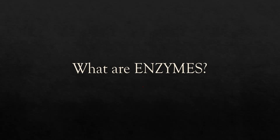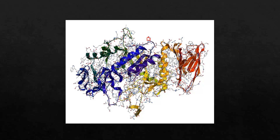Enzymes catalyze virtually all chemical reactions that occur in organisms. For example, in humans, digestion is catalyzed by enzymes such as amylase, lipase, protease, and others. These enzymes are produced only when they are required. You can see how these enzymes look, and within them you can see different shapes which are actually the active sites into which the substrate can fit.